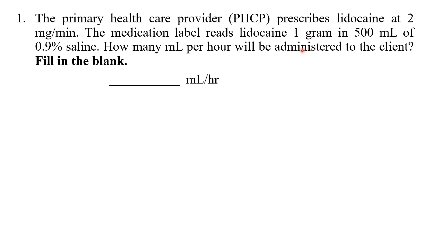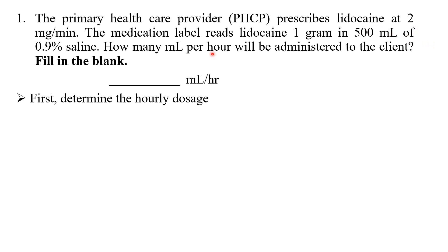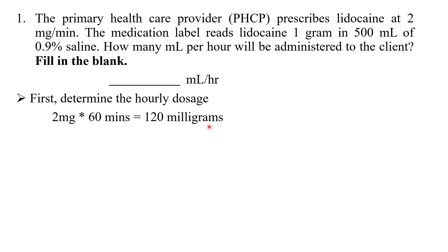Another issue: lidocaine is prescribed at 2 mg per minute, but the question asks for mL per hour. So we need to first determine the hourly dose. In one minute, 2 mg is prescribed; in one hour (60 minutes), that becomes 2 mg × 60 = 120 mg. So the hourly dose is 120 mg.